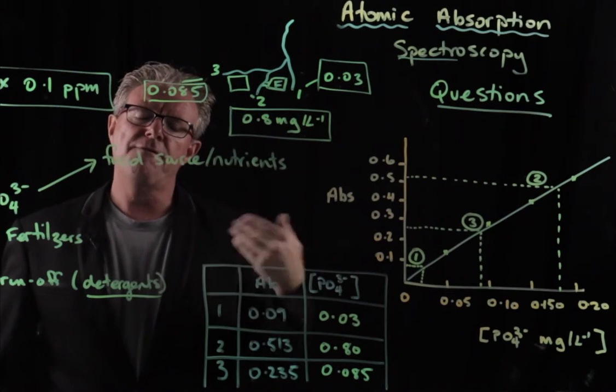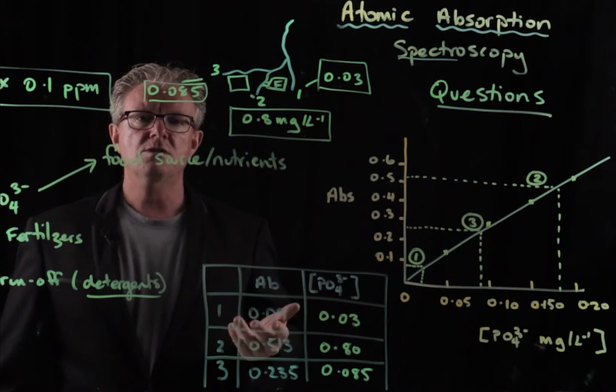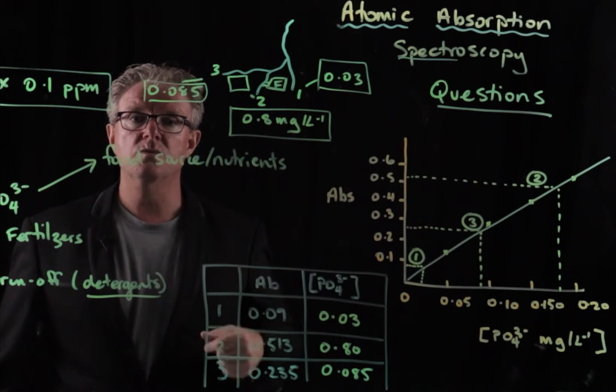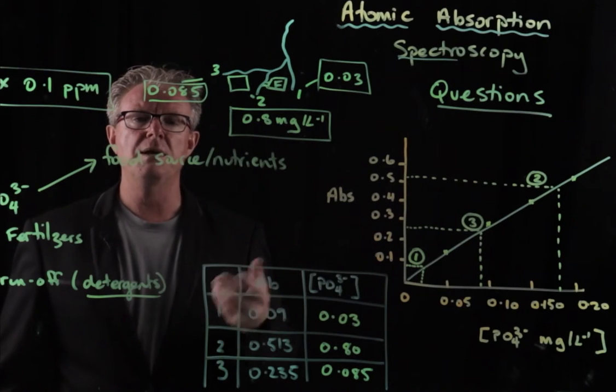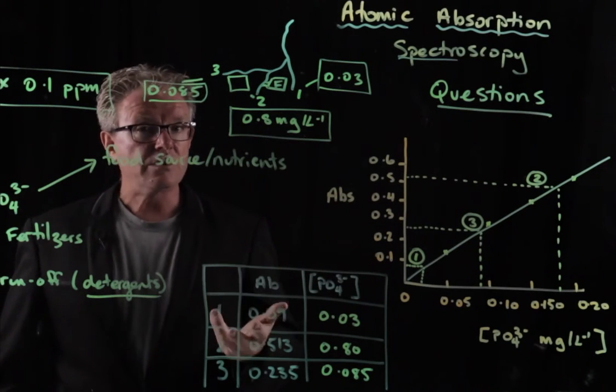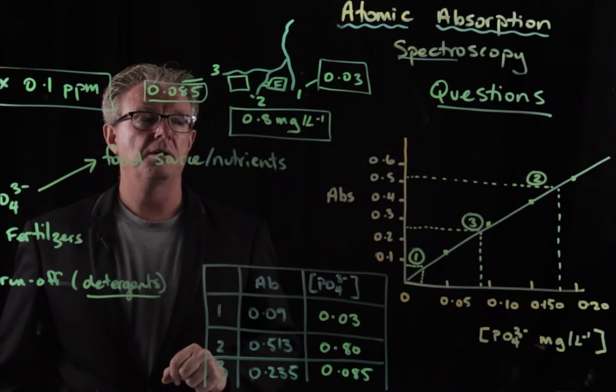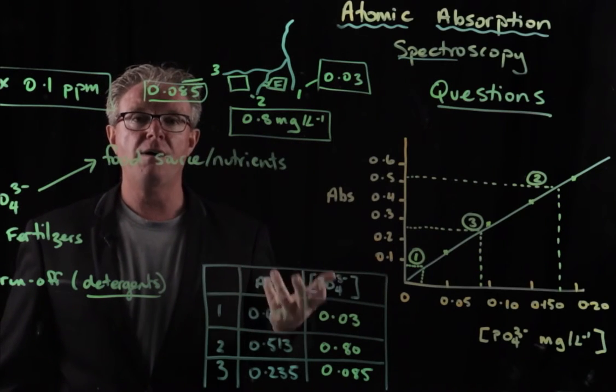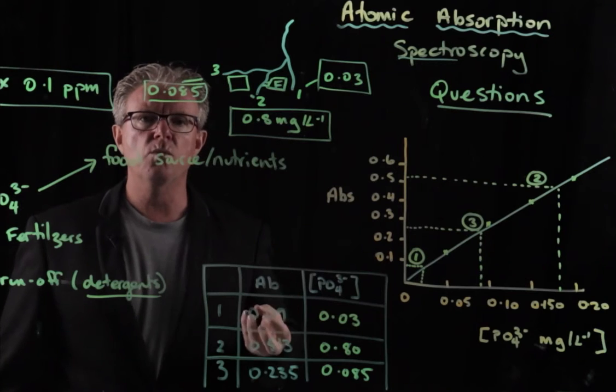to generate energy. And so, therefore, the oxygen concentration of the water body goes down. Big problem if you are an aquatic animal that needs oxygen to breathe like fish. So that's going to have a flow-on effect. It's also going to release toxins into the water as well. So all these algae with their metabolic processes are going to release toxins into the water.